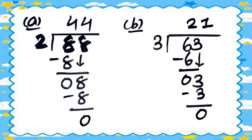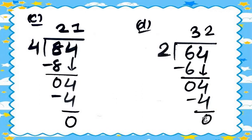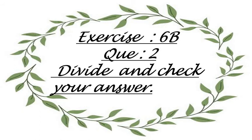Question 1c: 84 divided by 4. Four twos are 8, so 8 minus 8 equals zero, bring down 4. Four ones are 4, so 4 minus 4 equals zero. The quotient is 21. Question 1d: 64 divided by 2. Two threes are 6, so 6 minus 6 equals zero, bring down 4. Two twos are 4, so 4 minus 4 equals zero. The quotient is 32 and the remainder is 0.